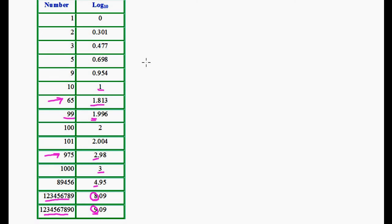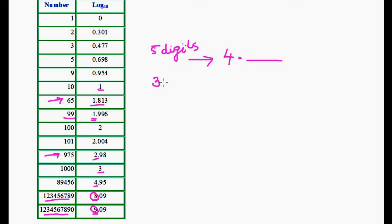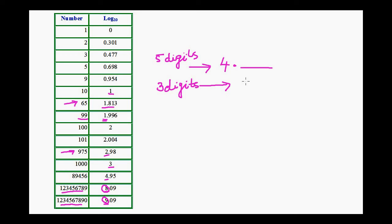We can conclude that if a number has 5 digits, then its logarithm is going to be 4 point something. If a number has 3 digits, then its logarithm is going to start with 2 point something. There is a clear correlation between the number of digits and the logarithmic value.